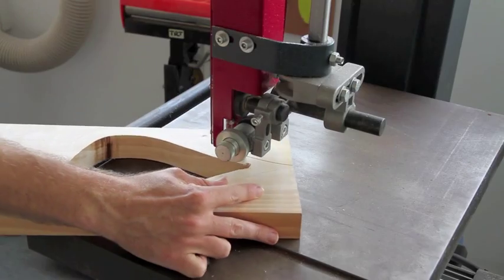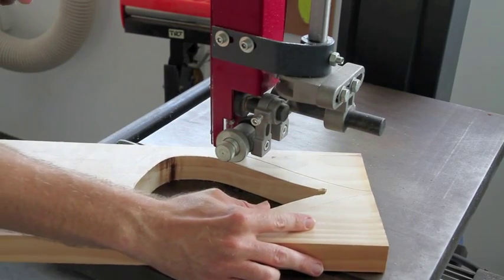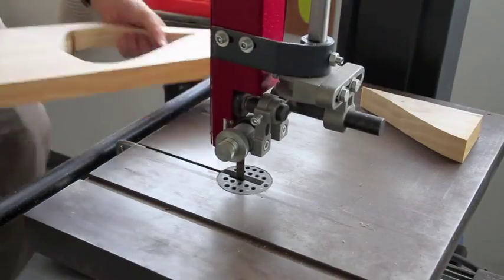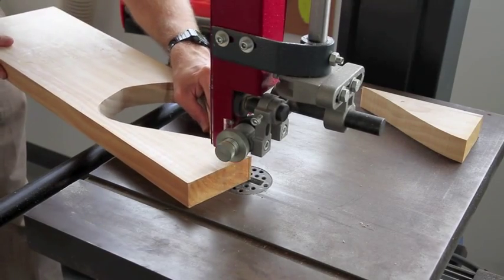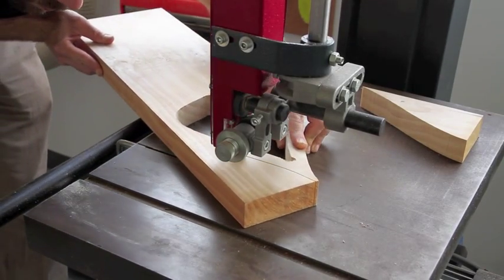The next step will be to use the bandsaw to cut out the exterior of your sound chamber. Remember to always cut on the waste side and to never cut over your lines.